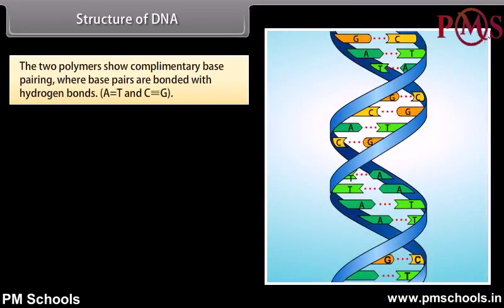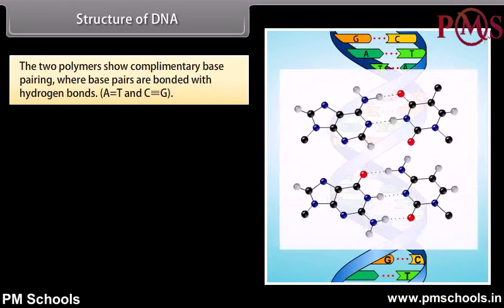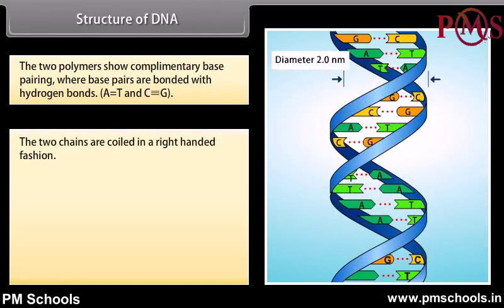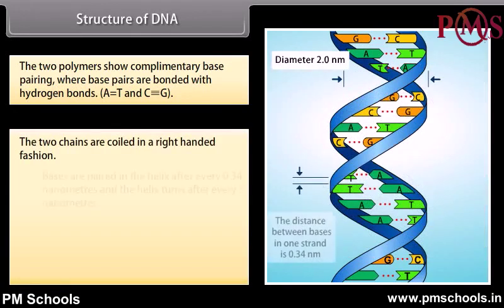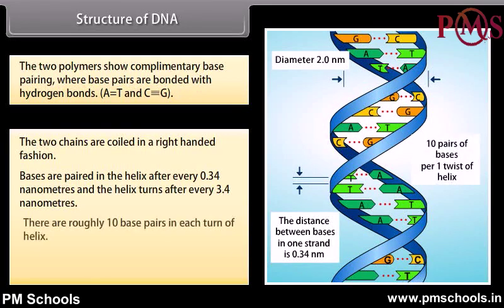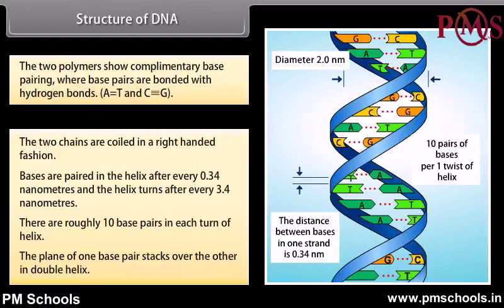The two polymers show complementary base pairing, where base pairs are bonded with hydrogen bonds. The two chains are coiled in a right-handed fashion. Bases are paired in the helix after every 0.34 nanometers, and the helix turns after every 3.4 nanometers. There are roughly 10 base pairs in each turn of the helix. The plane of one base pair stacks over the other in the double helix.